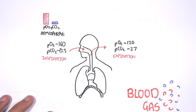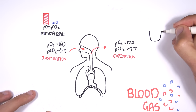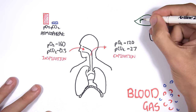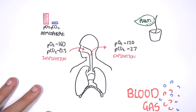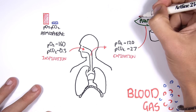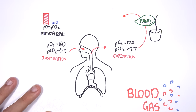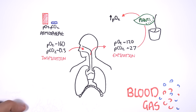But why is there such a low partial pressure of carbon dioxide in the atmosphere? This is because plants use the carbon dioxide and together with water and sunlight they produce energy, and as a by-product they produce oxygen. We breathe in this oxygen and produce the carbon dioxide which is then used by the plants, and the cycle continues.